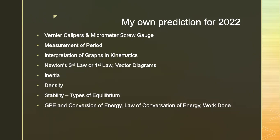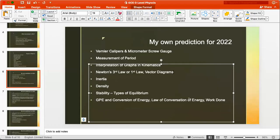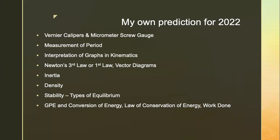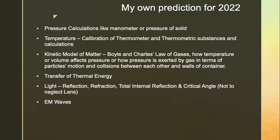Inertia and density — density hardly appeared last year, so please pay attention to this. Stability and test of equilibrium — you may be asked why something is stable, unstable, or neutral. Pay attention to why a person or object doesn't topple. Last year was KE; this year I think it will be GPE, but could also be KE. Conversion of energy and conservation of energy. Work done was hardly tested last year as well.